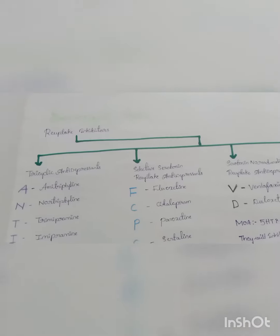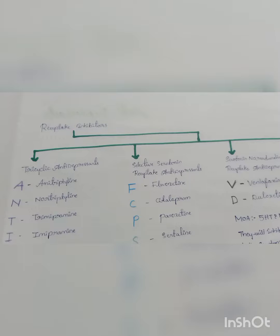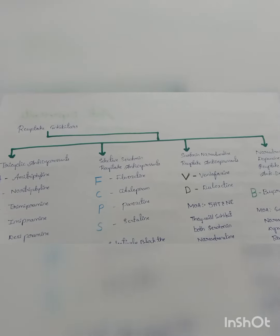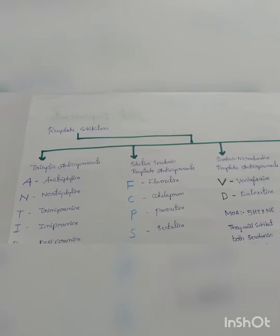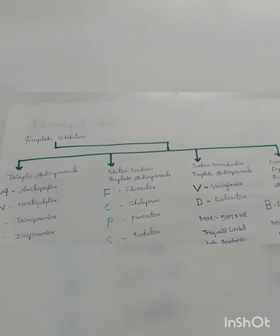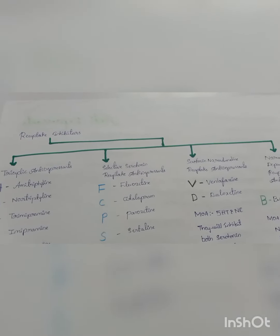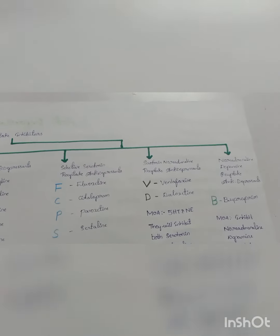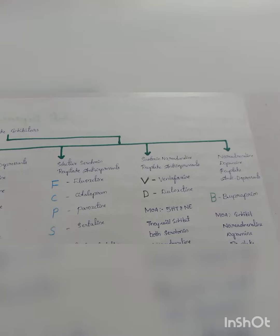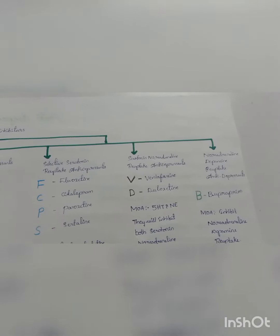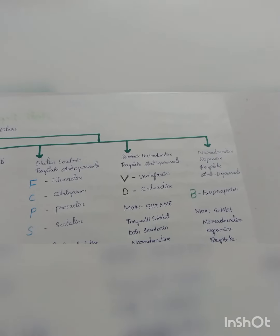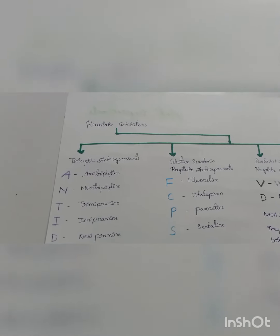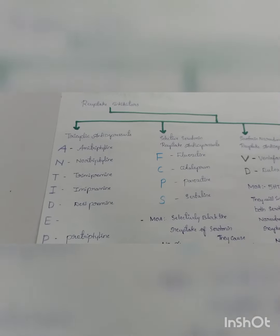Starting with the reuptake inhibitors — they are divided into four classes. The first is tricyclic antidepressants, the second is selective serotonin reuptake antidepressants, the third is serotonin-noradrenaline reuptake antidepressants, and the fourth is noradrenaline-dopamine reuptake antidepressants.